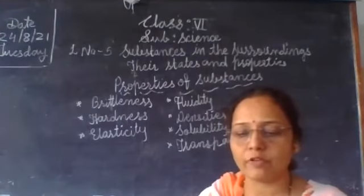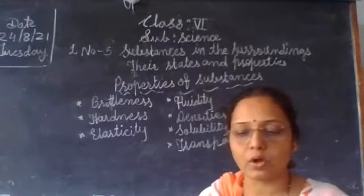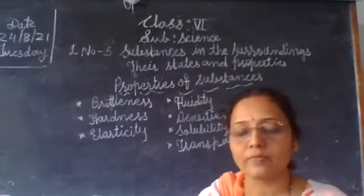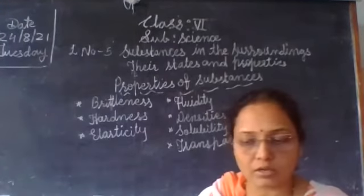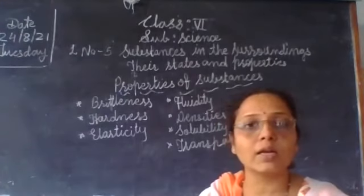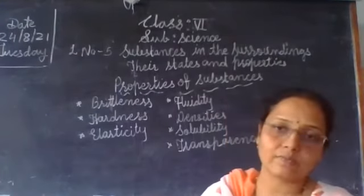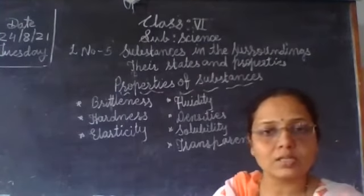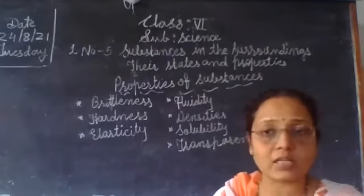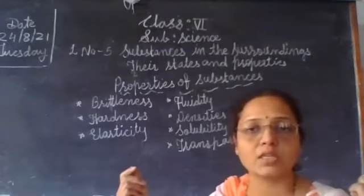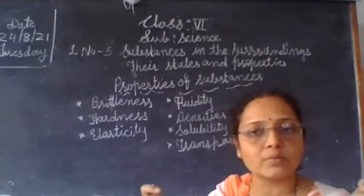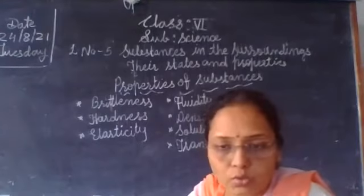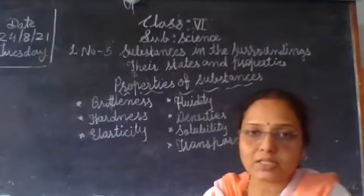Some substances change their shape when a force is applied on them but return to their original shape and size when the force is removed. This property is called elasticity. A rubber band shows elasticity. Thread does not show elasticity because it does not return to its original length. Cloth also does not show elasticity.